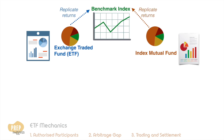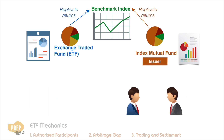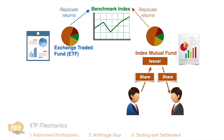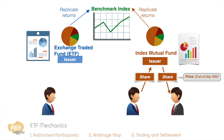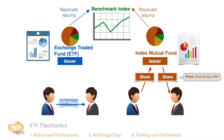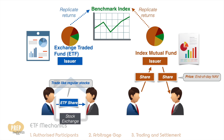The main difference between the two is their method of creation and redemption of shares. Investors buy or sell mutual fund shares at the end of the day directly with the issuer at the closing NAV of the fund. In contrast, investors can trade ETFs with each other like regular stocks on the stock exchange during trading hours.